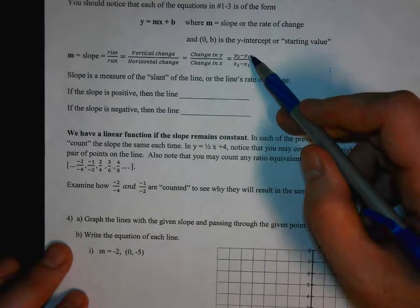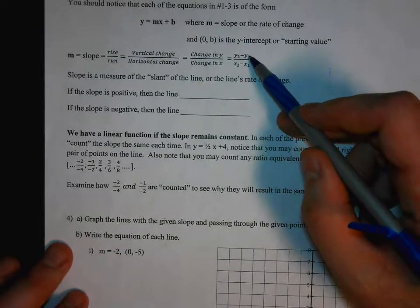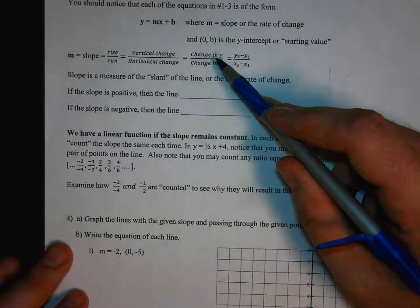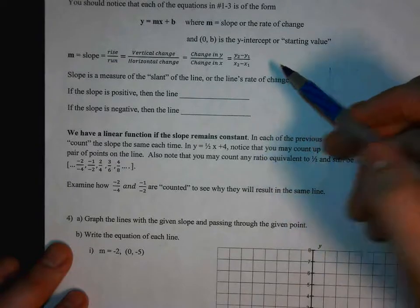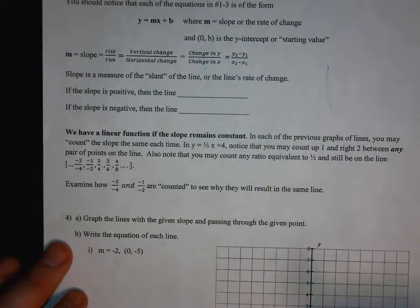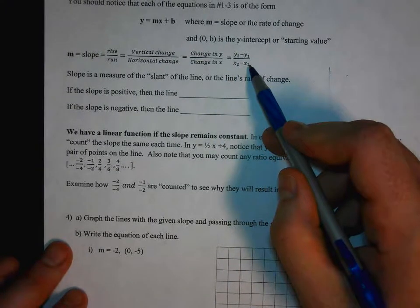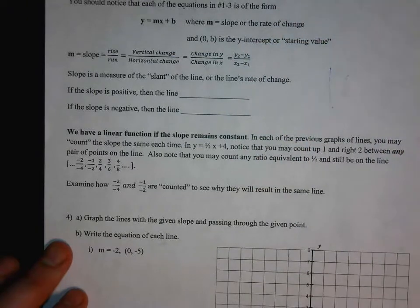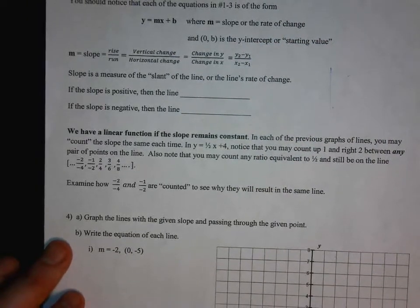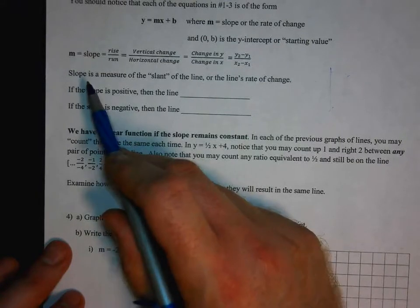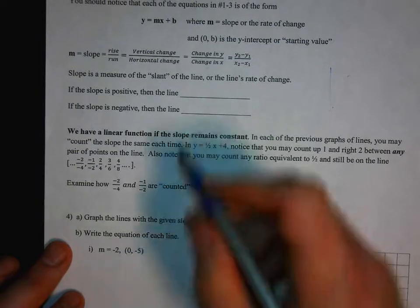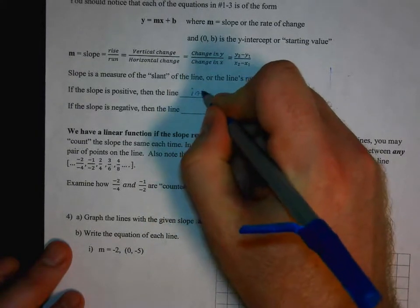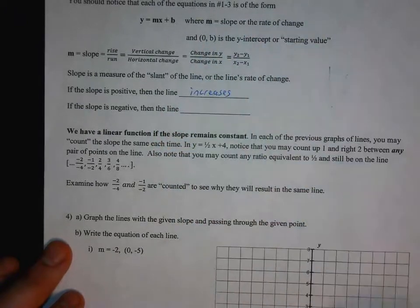There's also a formula using subscripts: y2 minus y1 — that's how you find the change in y values. For example, if y went from 4 to 6, that'd be a change of 2, because 6 minus 4 gives you positive 2. Change in x is x2 minus x1. Slope is a measure of the slant of the line or the line's rate of change. If the slope is positive, then the line increases — as you go from left to right, the y values will get higher.